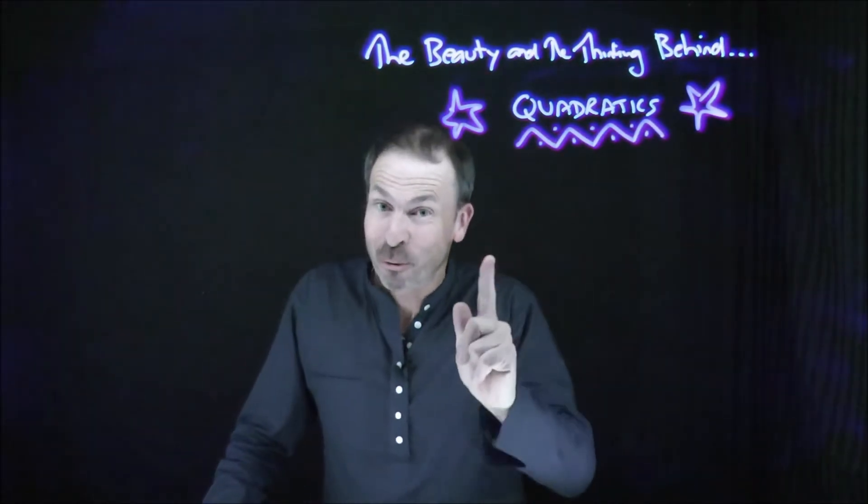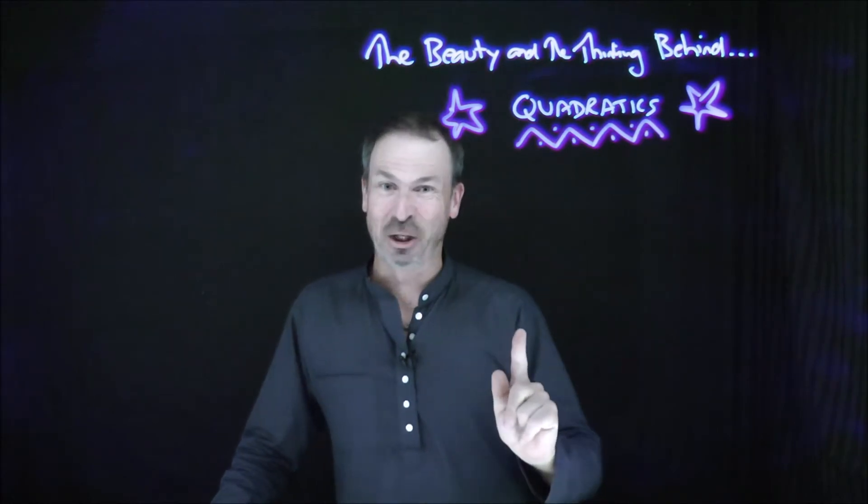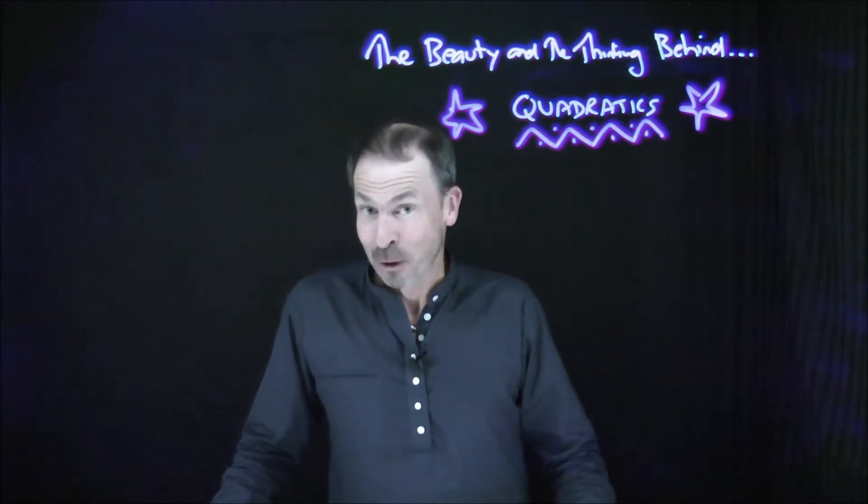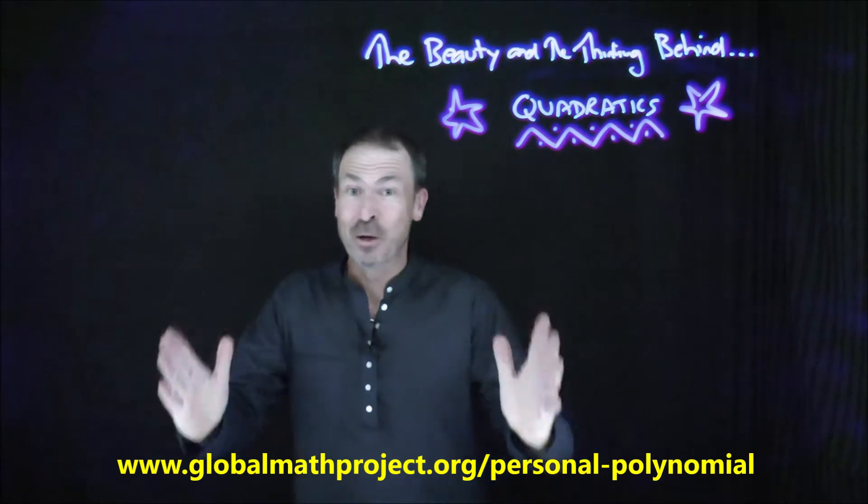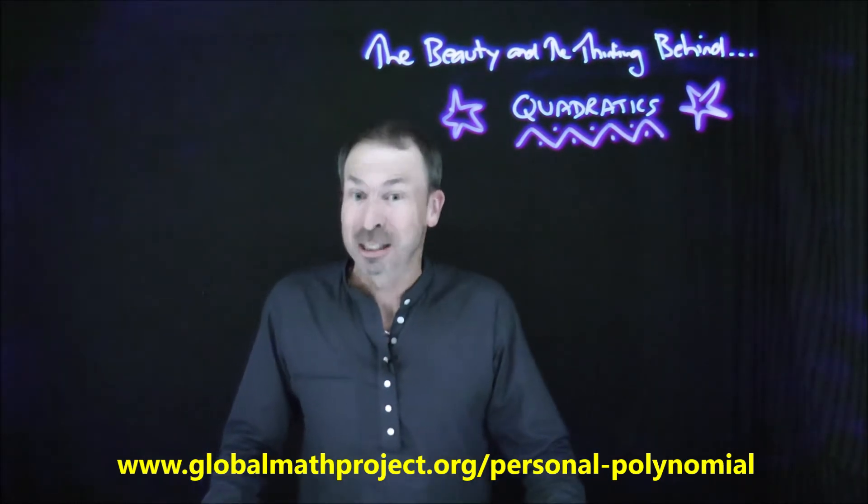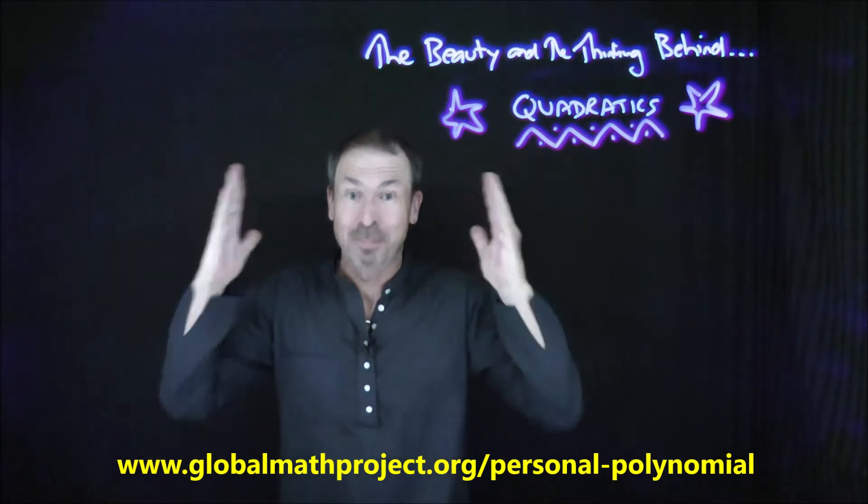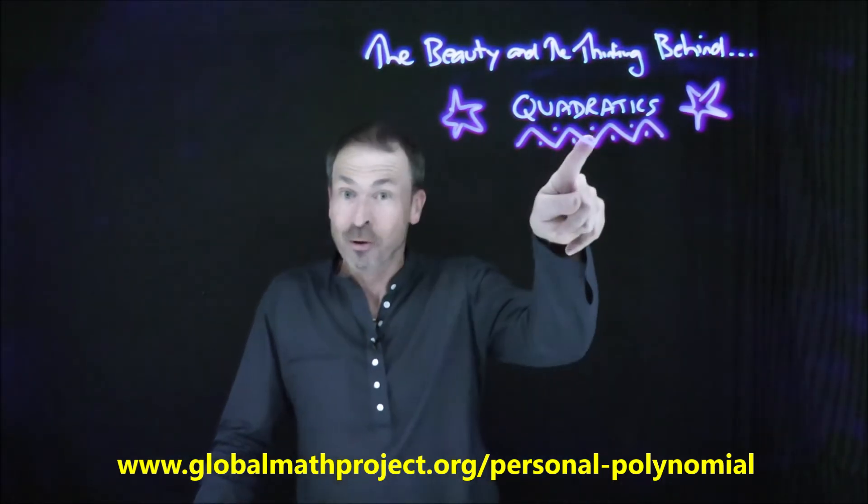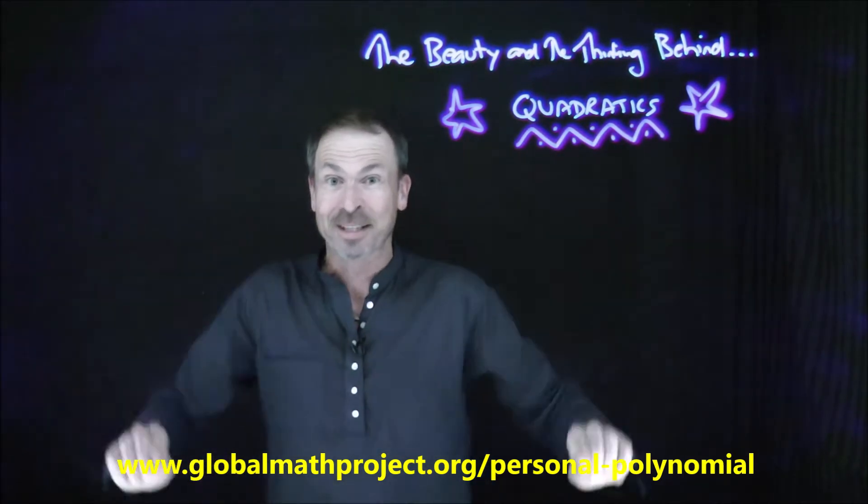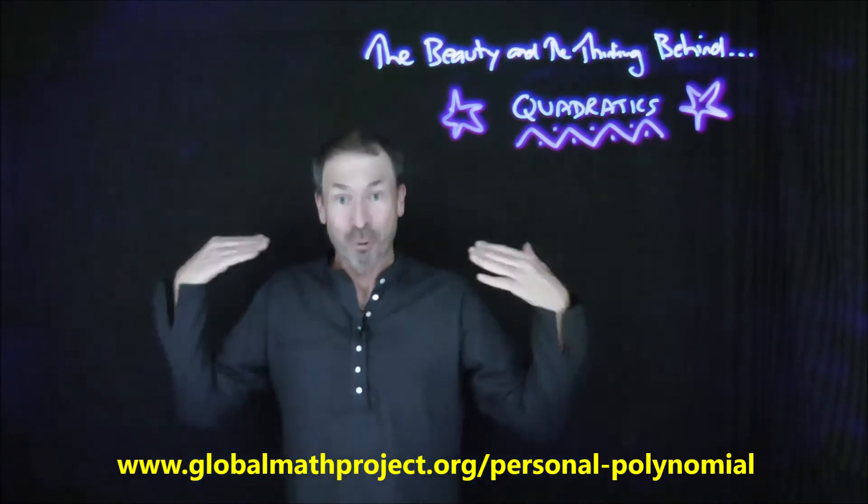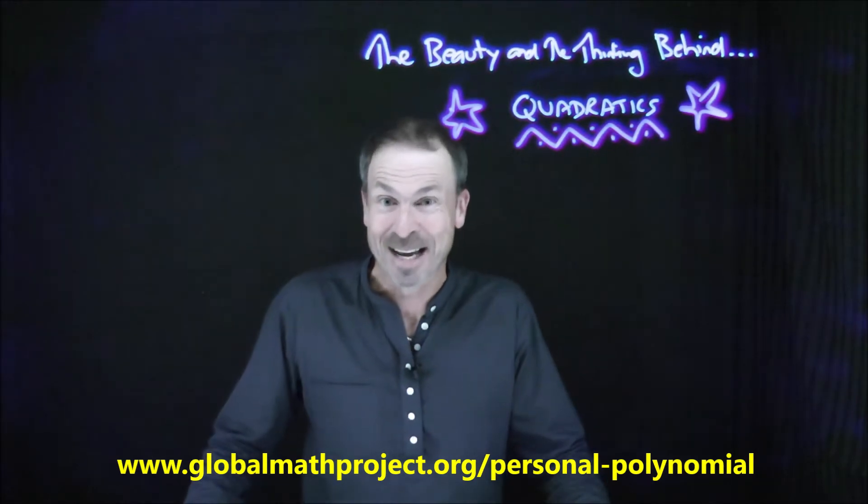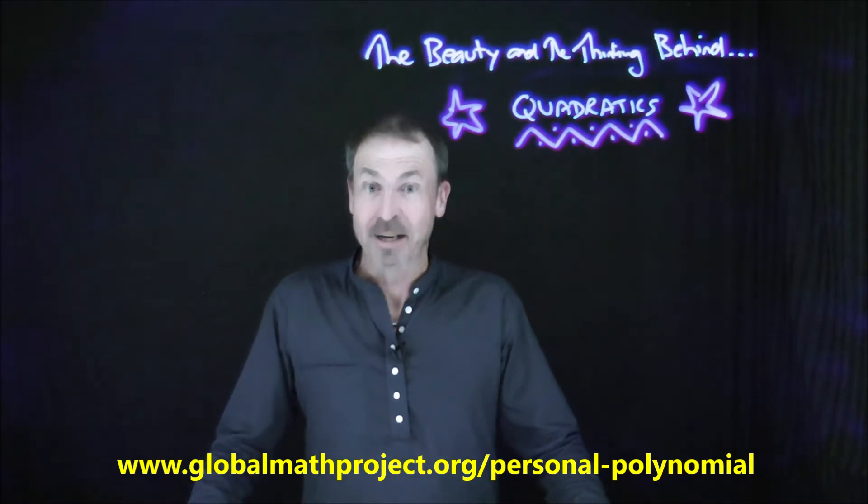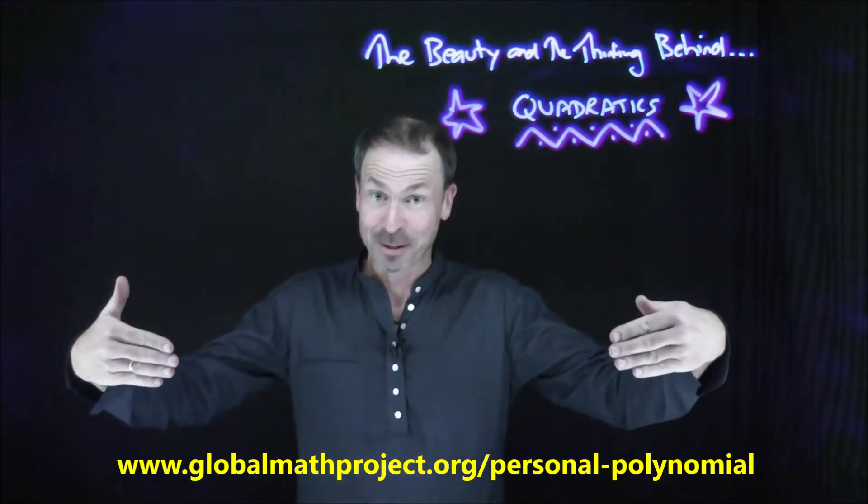Now we've actually already done this in a fun way in the last lecture. Do you remember doing personal polynomials? Where I wrote down for you a quadratic expression that actually spells my initials, JST. And then I wrote down a quadratic equation that actually spells my nickname, Jim, J-I-M. And if we go beyond quadratics, actually write down longer formulas that spell longer words, like my proper name, James, J-A-M-E-S.